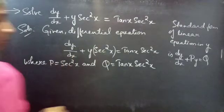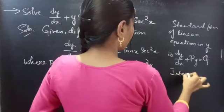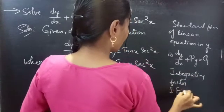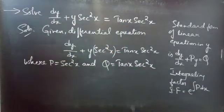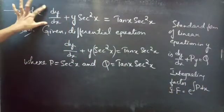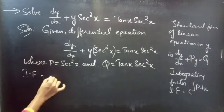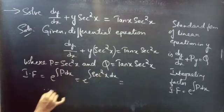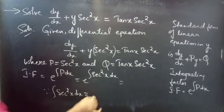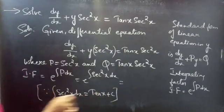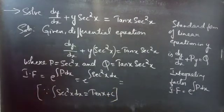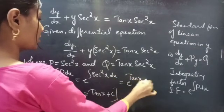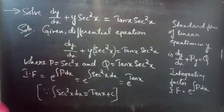Now we need to find the integrating factor for the given equation. We know that the integrating factor is given by e raised to the power of the integral of P dx. Using this, the integrating factor equals e^(∫sec²x dx). Since ∫sec²x dx equals tan x, we replace sec²x and get e^(tan x), which is the required integrating factor.